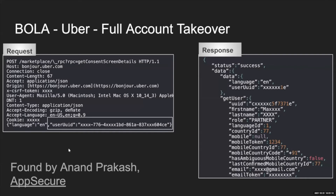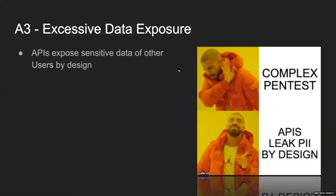Here's a real example from Uber, found by Anand Prakash from AppSecure — it was a full account takeover. Anand found an API endpoint called get-account-screen-details, and the response contained the user's first name, last name, email, and even the authentication token. He simply changed his own user ID to someone else's ID in the request, and the response contained that other user's information. This gave him access to a full list of all users on Uber, including riders and drivers.